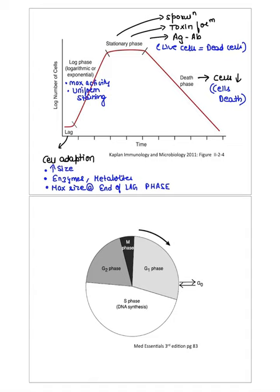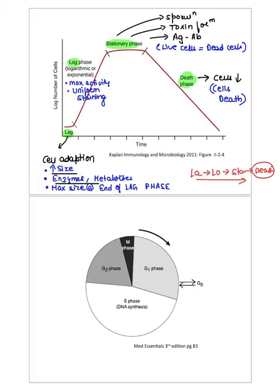Next is the bacterial growth cycle. You have four phases: lag, log, stationary, and death. To arrange them in order — lag, log, stationary come in ascending order; death always comes at the end. The lag phase is when the cell is not going fast — it needs time to increase in size and accumulate enzymes and metabolites. At the end of lag phase, the cell reaches maximum size.